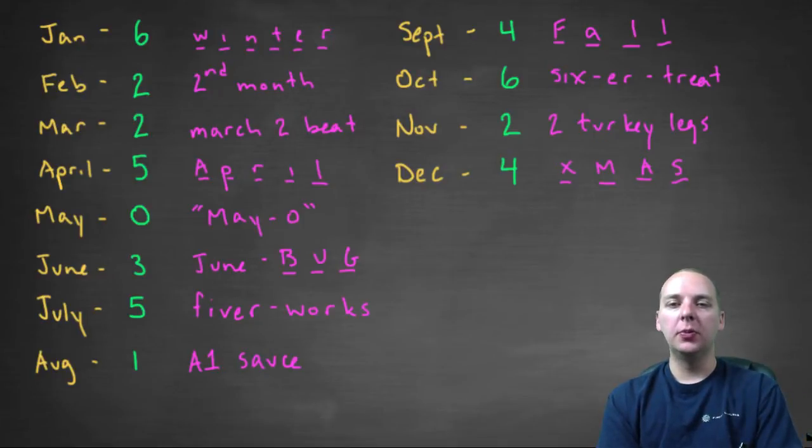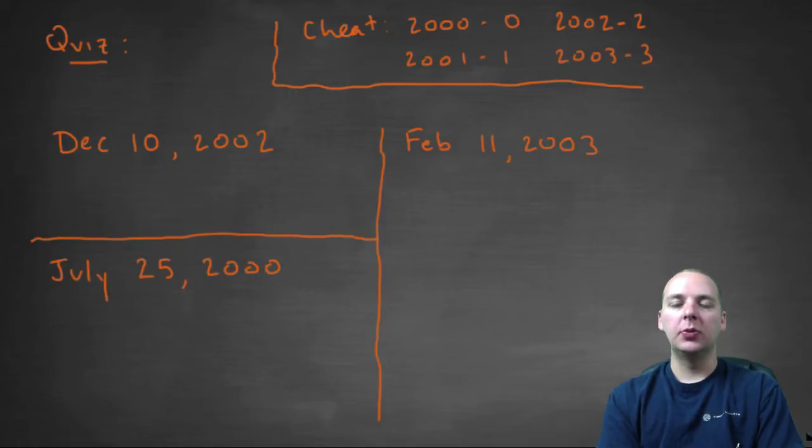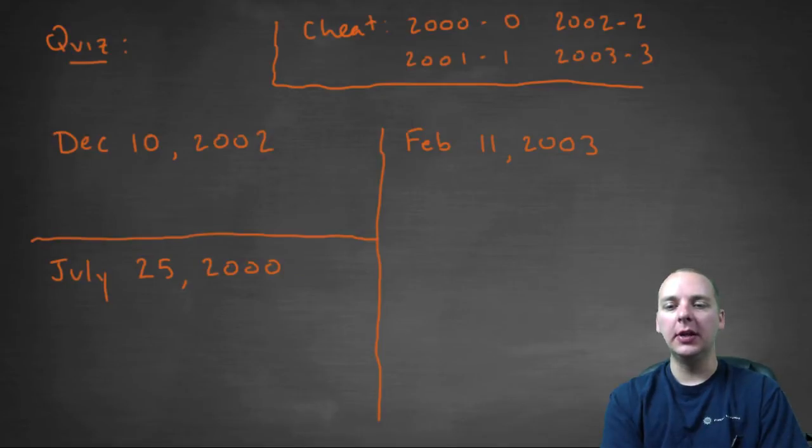So go through and quiz yourself a little bit, and when you feel up to it, let's go for an actual full-fledged example now. We've got day codes down, we've got month codes down, we haven't discussed year codes.